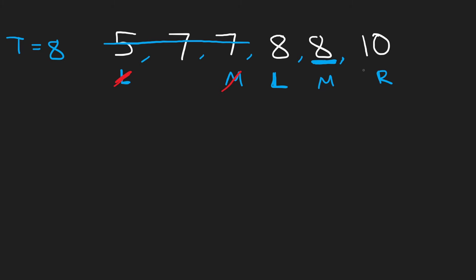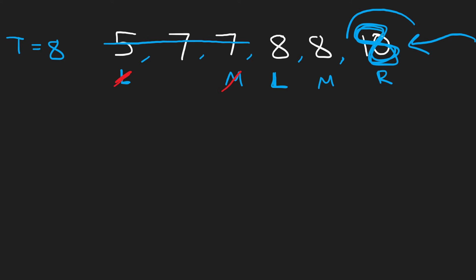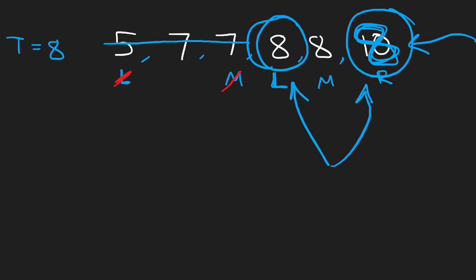That's how regular binary search works. But in this case, we want the leftmost eight and the rightmost eight — we want both positions. It's technically possible that a value to the left could also be eight, but our algorithm would stop here. So we need to handle the case where there are multiple copies of the target and we need the boundary indices.